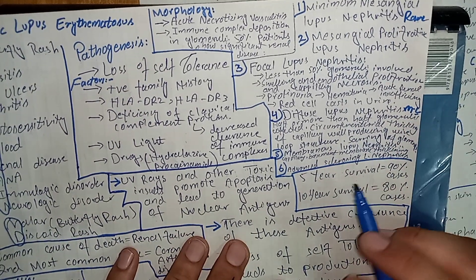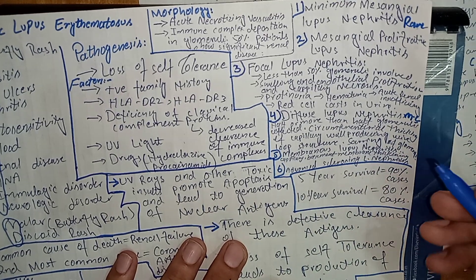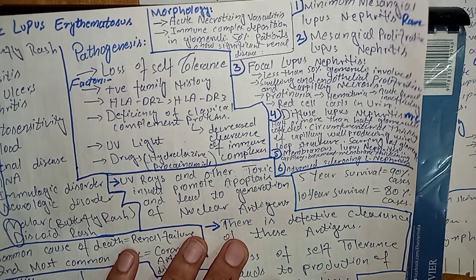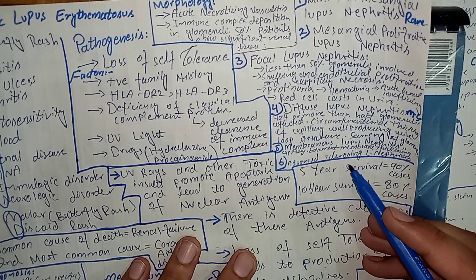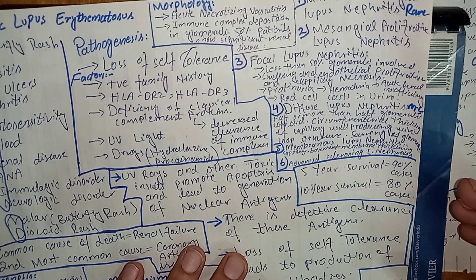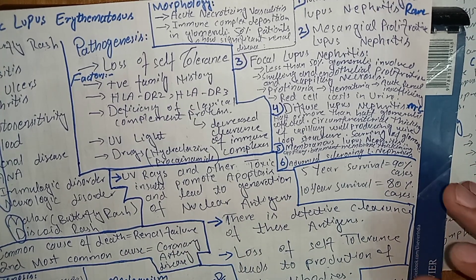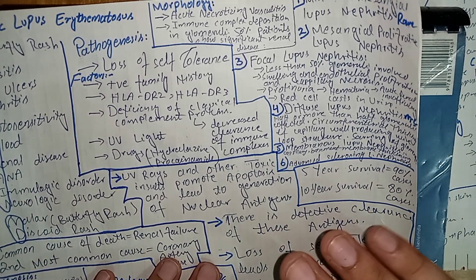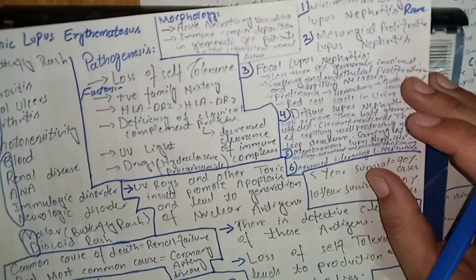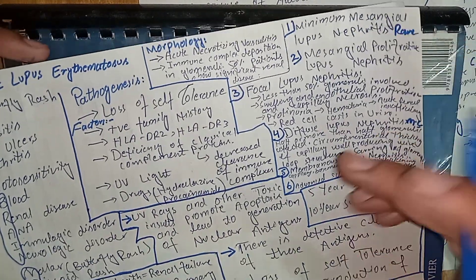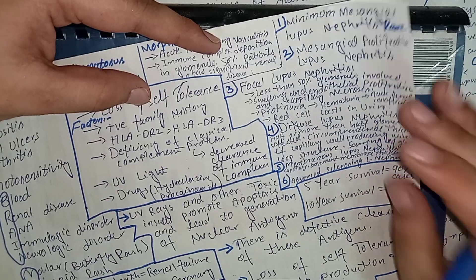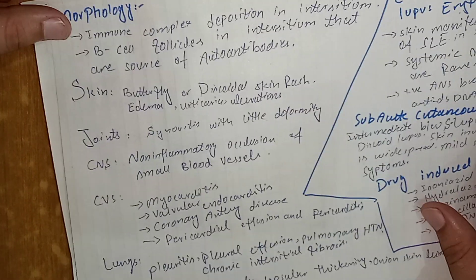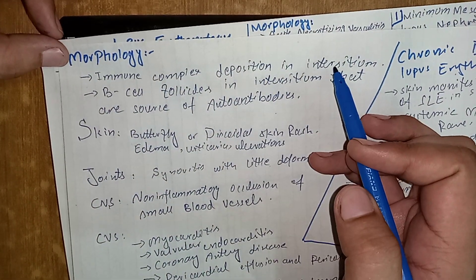Fifth is membranous lupus nephritis, which is a more advanced stage where capillary walls and basement membranes are thickened and symptoms of renal insufficiency become more pronounced. The sixth and last stage is advanced sclerosing lupus nephritis, where kidney function is severely compromised and the patient is moving toward end-stage kidney disease. To summarize: the rarest is minimal mesangial lupus nephritis and the most common is diffuse lupus nephritis.